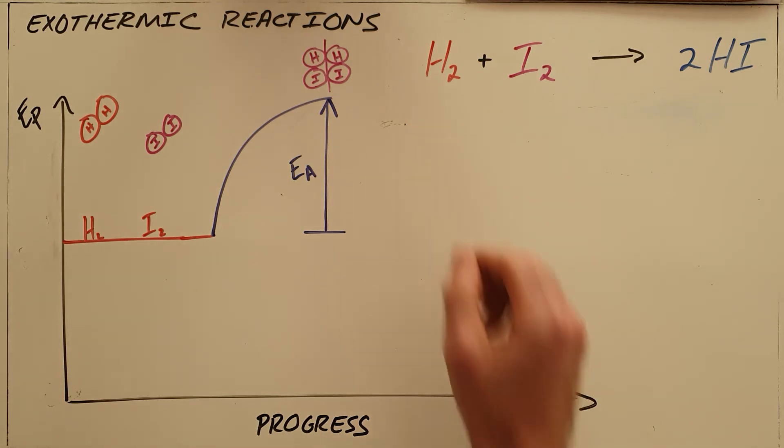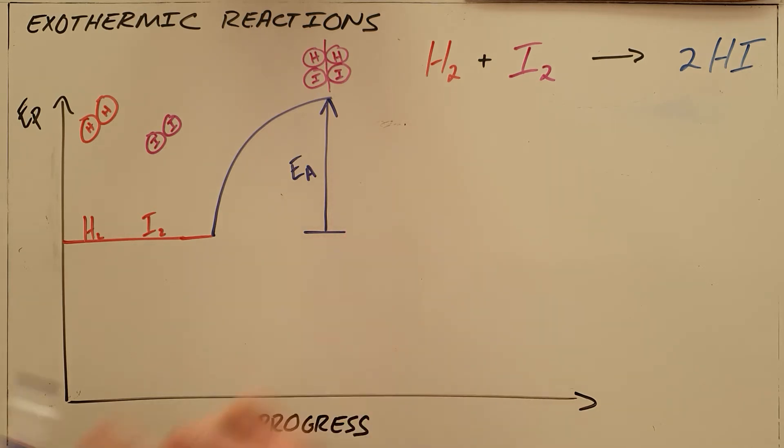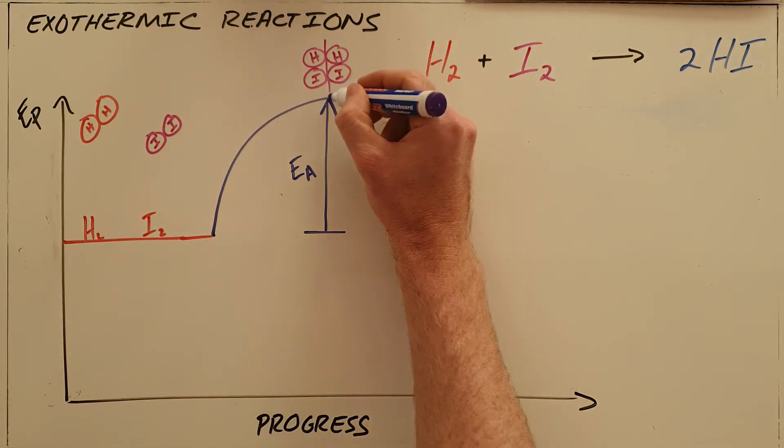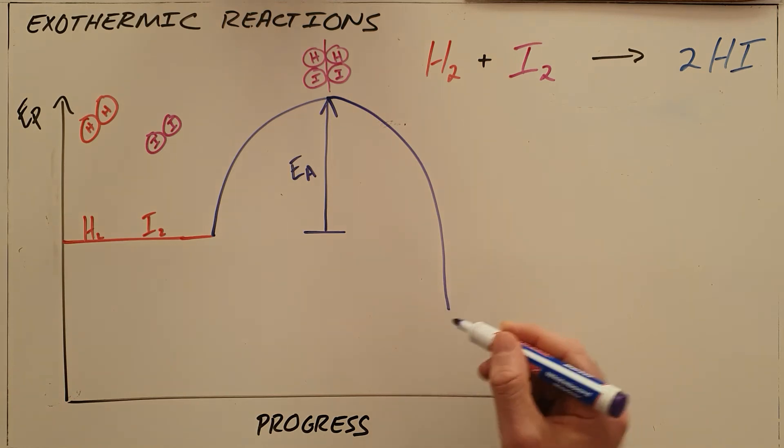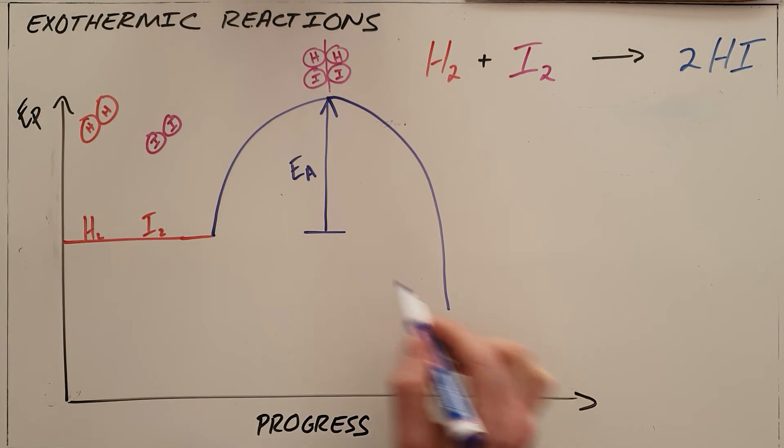Now in an exothermic reaction, which is what we have here, when that happens the amount of energy or the potential energy that hydrogen iodide molecules have is lower, meaning it is a more stable molecule than individual hydrogen and iodine molecules.